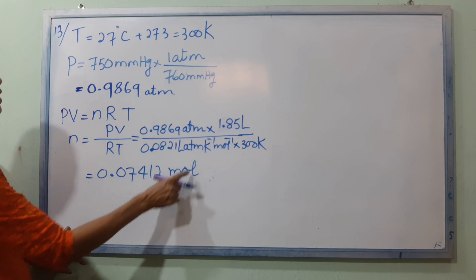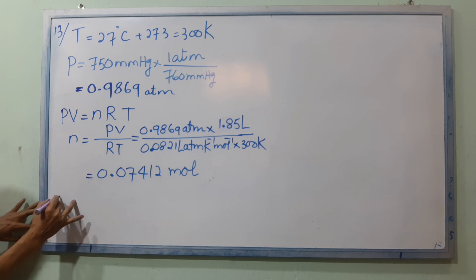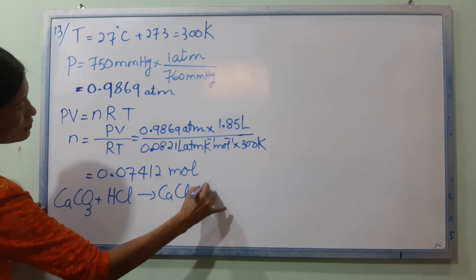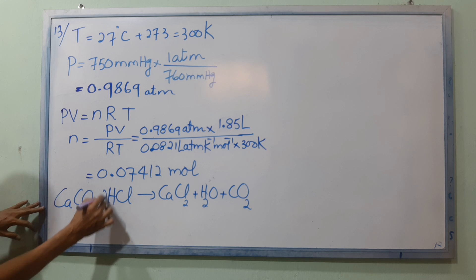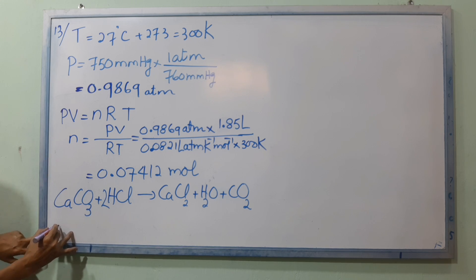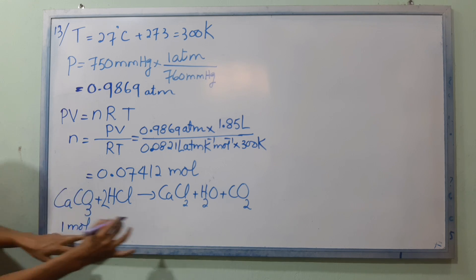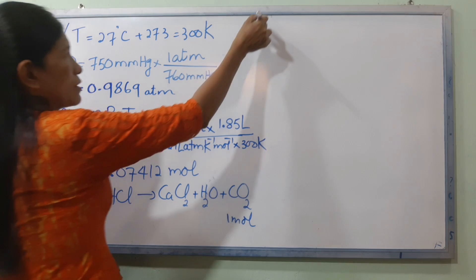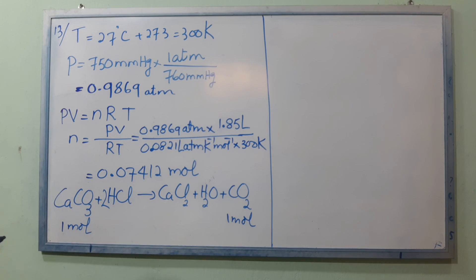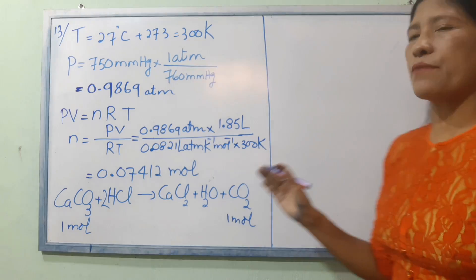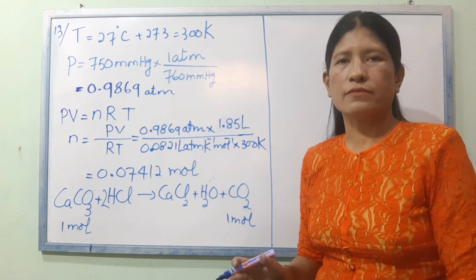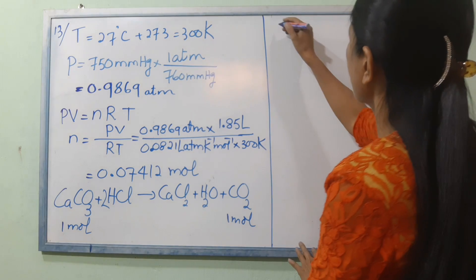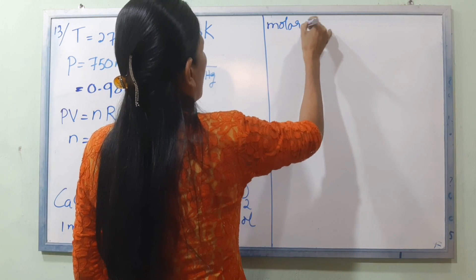Looking at the equation: CaCO₃ plus HCl gives CaCl₂ plus H₂O plus CO₂. Since CaCO₃ is 0.07412 moles and the molar ratio is 1:1, CaCO₃ is also 0.07412 moles.